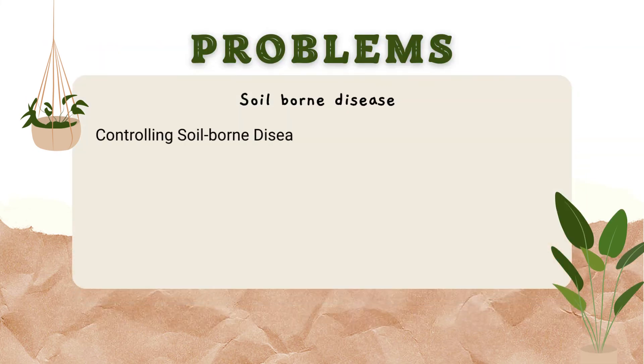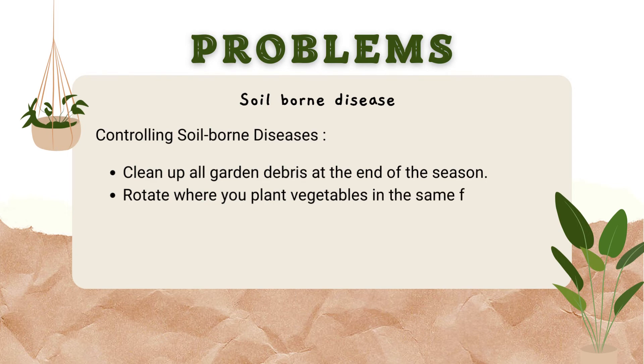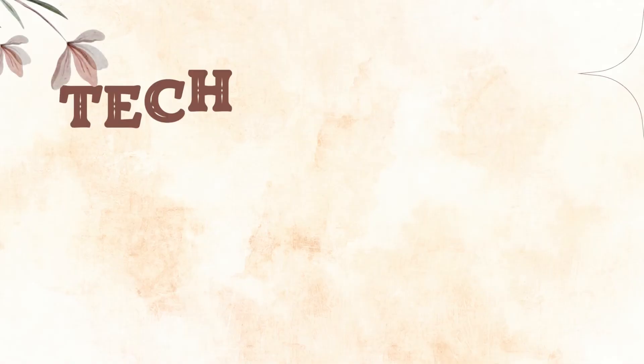There are three ways to control soil-borne disease. First of all, remove all kinds of plant debris at the end of the season. Second, rotate where you plant vegetables in the same family. Last but not least, some common fungal problems can be prevented by treating with sulfur or copper early in the season.